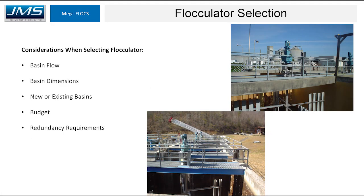Some considerations when selecting between flocculator technologies are usually basin flow — some technologies are not cost-effective for large flows. The basin dimensions also matter, as flocculators must be arranged to eliminate dead zones and prevent short-circuiting. For new or existing basins, they may or may not be able to support vertical-type mixers; you may have to add steel or concrete bridges.